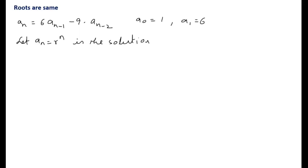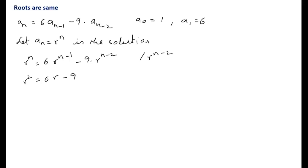Substituting, the recurrence relation becomes rⁿ = 6·rⁿ⁻¹ - 9·rⁿ⁻². We divide through by rⁿ⁻² to get r² = 6r - 9.